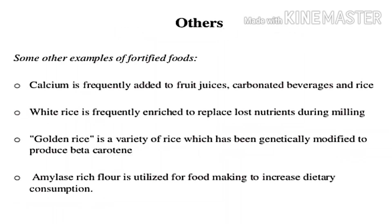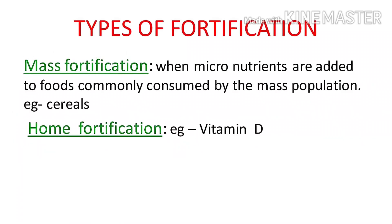Here we have a few examples. Calcium can be added in dairy products, fruit juices, and carbonated beverages. You can also enrich nutrients in white rice, and enrich vitamins and minerals in other foods. Golden rice is a variety of rice which has been genetically modified to produce beta-carotene. This is an example of biofortification.